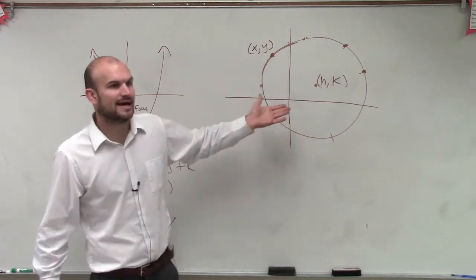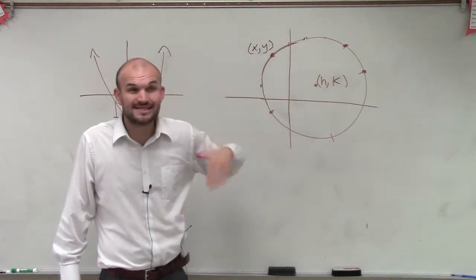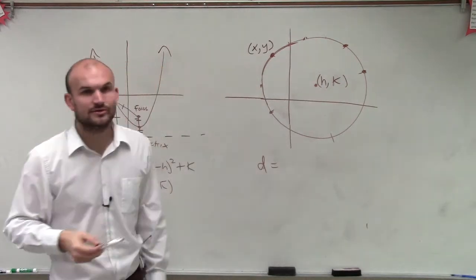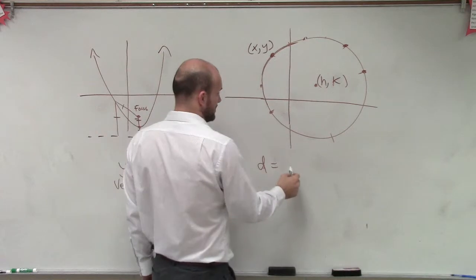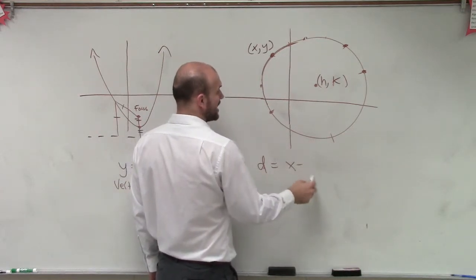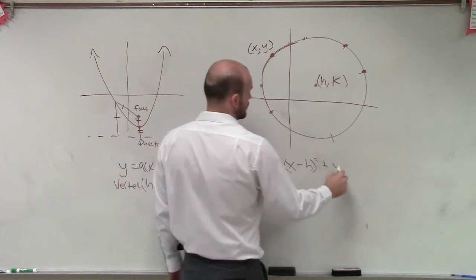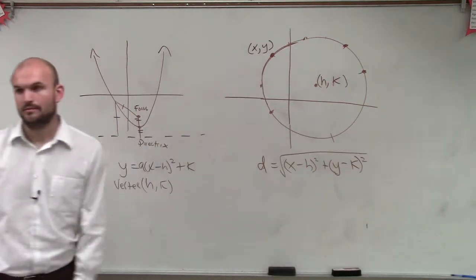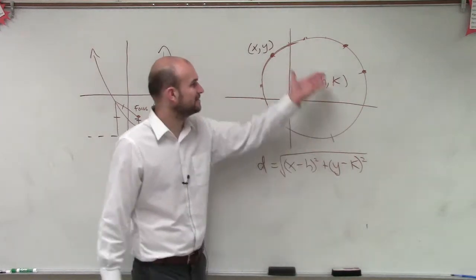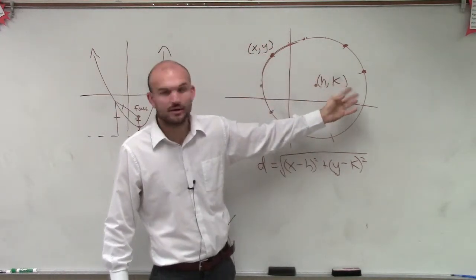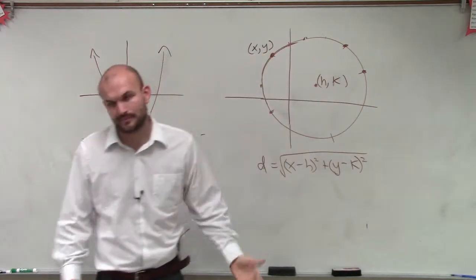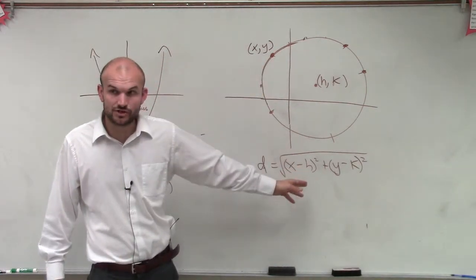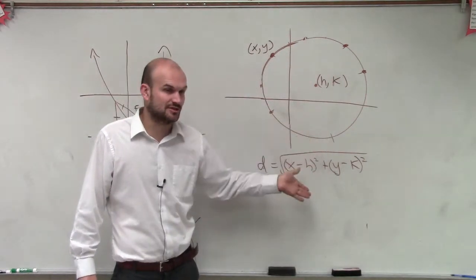So now let's go ahead and figure out what that distance would be. Because we said all the distances are all equal. So we could say the distance between h, k and x, y — does anybody remember how to find the distance? We could use the distance formula, which is x minus h squared plus y minus k squared, and then you take the square root. This could be like x1, y1 and x2, y2. But now we're using x and h. So as long as you have the difference of the two points, you find the difference of the two points, square them, add them up, and then take the square root. That's the distance formula.